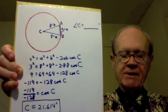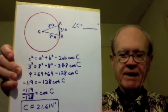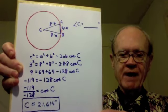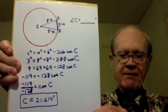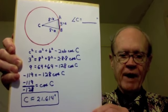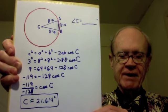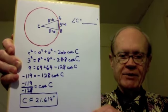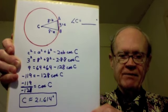I subtract the 64s from both sides, and I get -119 = -128 cos C. I divide both sides by -128, and I have -119/-128 = cos C. If we want to, we can just change both those negatives to positives, because a negative over a negative is positive.